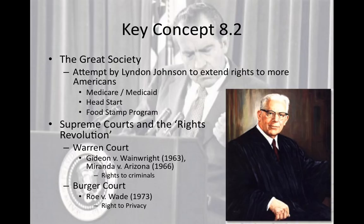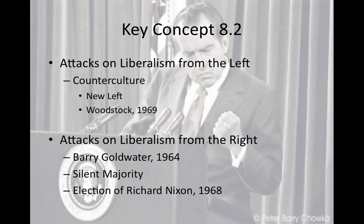Attacks on liberalism came from two sides. From the left came the counterculture — the New Left, academics arguing against American policies, hippies associated with free love, and Woodstock in 1969 — criticizing liberalism for its failures. From the right came conservatives like Barry Goldwater, who said the Great Society's social programs were just handouts. The silent majority voiced displeasure with liberalism by voting for Richard Nixon in 1968.